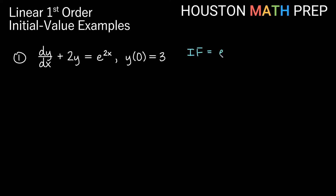Our integrating factor is going to be e to the integral of our function p here next to y, which is 2. So e to the integral of 2 dx — the integral of 2 is easy, that's just going to give us 2x in the exponent. So our integrating factor is e to the 2x. We'll go ahead and multiply the entire equation by our integrating factor.